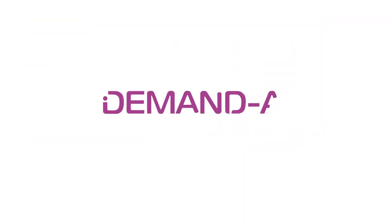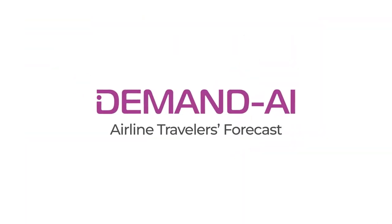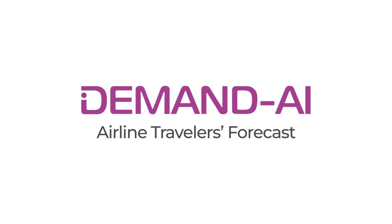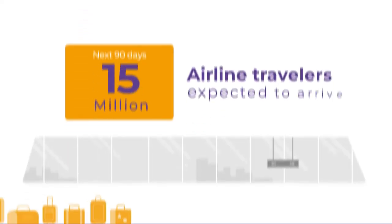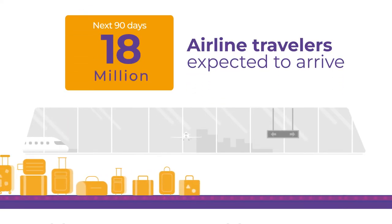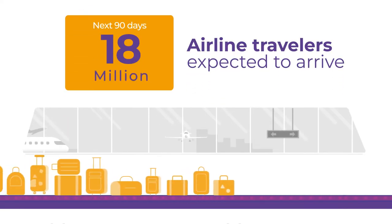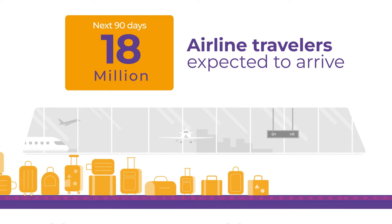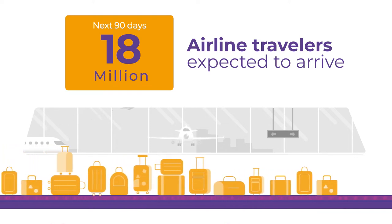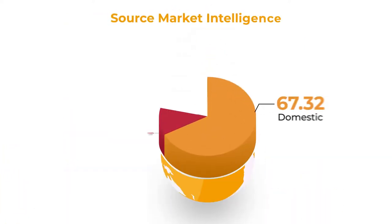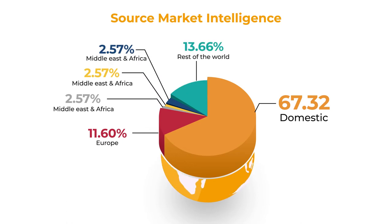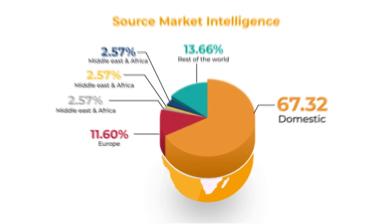The answer is Demand AI's Traveler Forecast. With Demand AI, you can determine the number of travelers anticipated to arrive at your destination over the next 90 days. Not only that, you can also know where they are coming from and when.